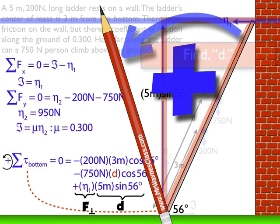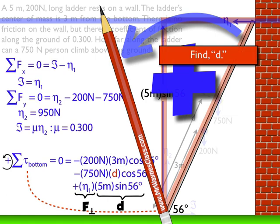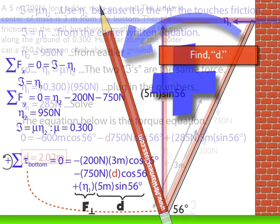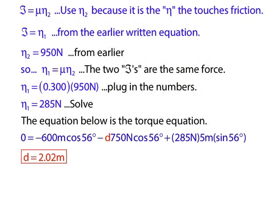Now it's time for algebra to find the distance. Friction equals mu times eta, friction equals eta1, eta2 equals 950 Newtons — found earlier from summing forces. Eta1 equals mu times eta2 — also found earlier. Plugging in the numbers gives eta1 equal to 285 Newtons. Substituting everything into the torque equation and solving for d gives d equal to 2.02 meters.